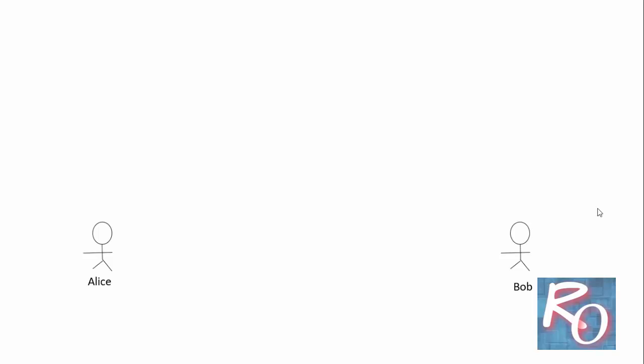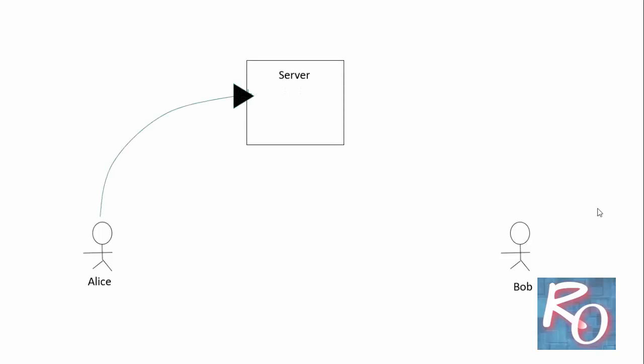Consider a classic example of Alice and Bob. Alice wants to communicate with Bob, and this communication always takes place through a server. Alice sends a message to the server, the message is saved at the server, and then sent to Bob.